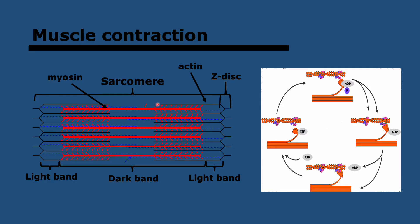How does muscle actually contract? It's through the sliding of actin and myosin against each other. Myosin has heads which form cross bridges to binding sites on actin. ATP binds to myosin, causing it to detach from actin. Then ATP is hydrolyzed, causing myosin to change its angle and bind to actin further from the center. The myosin heads then push the actin inwards — that's called a power stroke — causing muscle contraction. In the sarcomere, the areas where myosin and actin overlap are called dark bands, and where there is only actin they are called light bands. When muscle contracts, the light bands become smaller because the actin moves inwards.